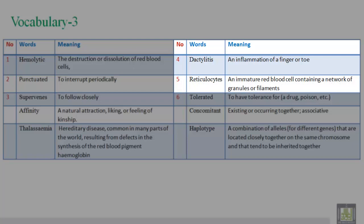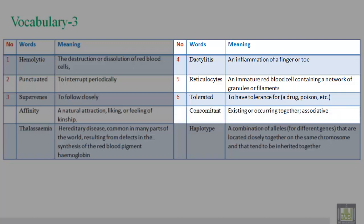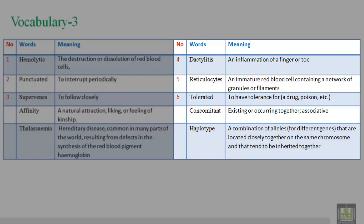16. Dactylitis: an inflammation of a finger or toe. 17. Reticulocytes: an immature red blood cell containing a network of granules or filaments. 18. Tolerated: to have tolerance for a drug or poison. 19. Concomitant: existing or occurring together, associative. 20. Haplotype: a combination of alleles for different genes that are located closely together on the same chromosome and that tend to be inherited together.